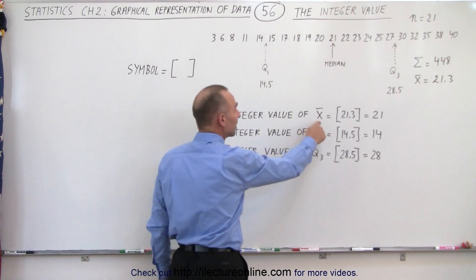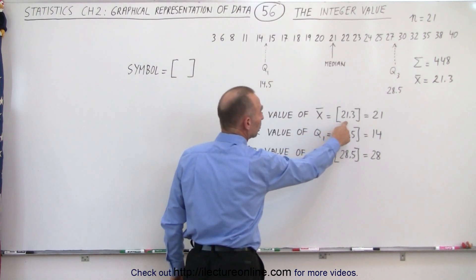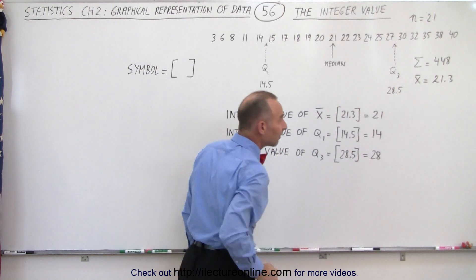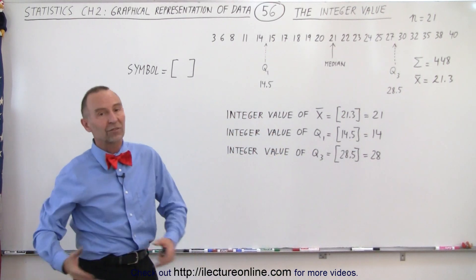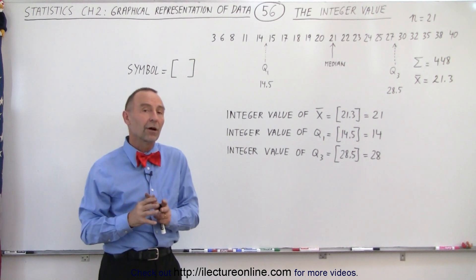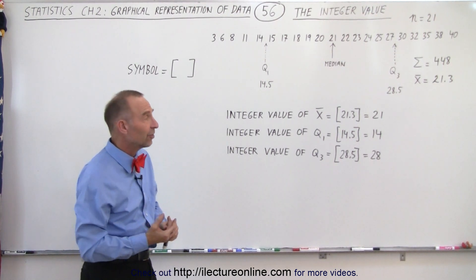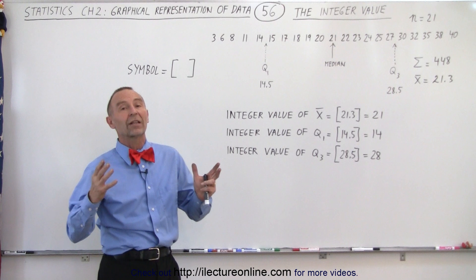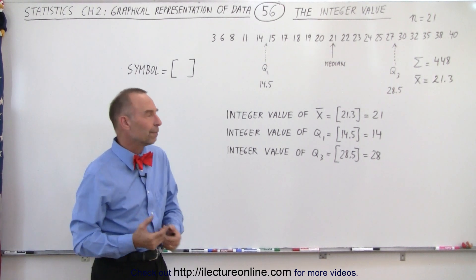In the case of calculating the mean or average, it is indeed 21.3, but the integer value of that is 21. Quite often it's simply much easier and simpler to use the integer value, for example, of the average of a data set, especially when the whole data set is reported in integer values to begin with.